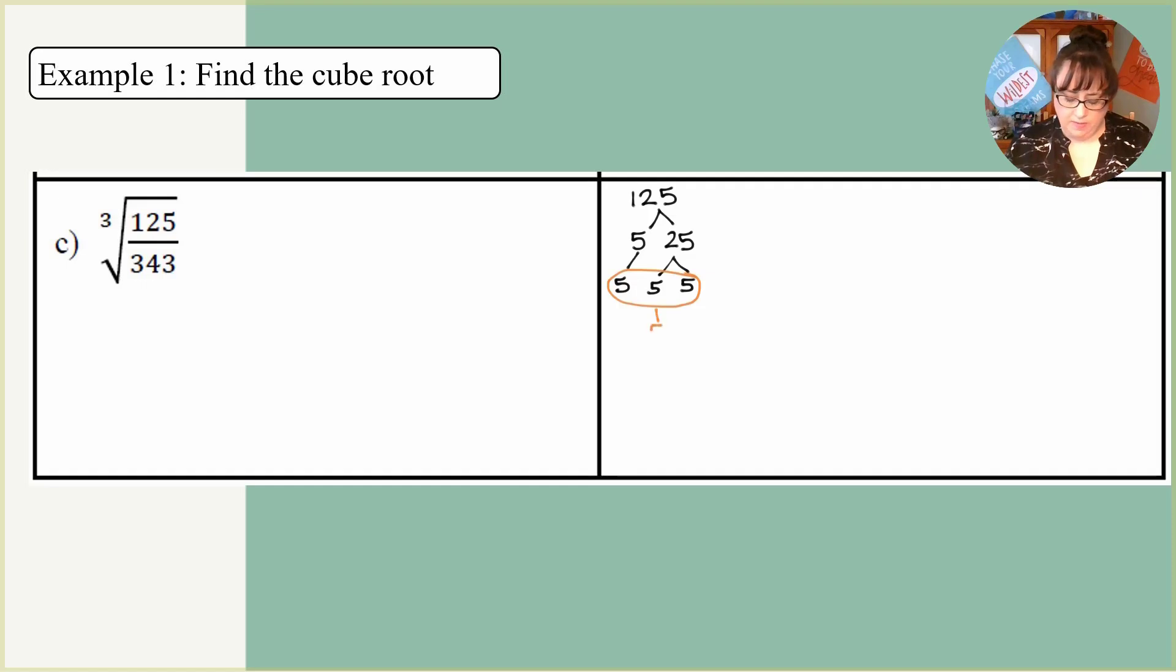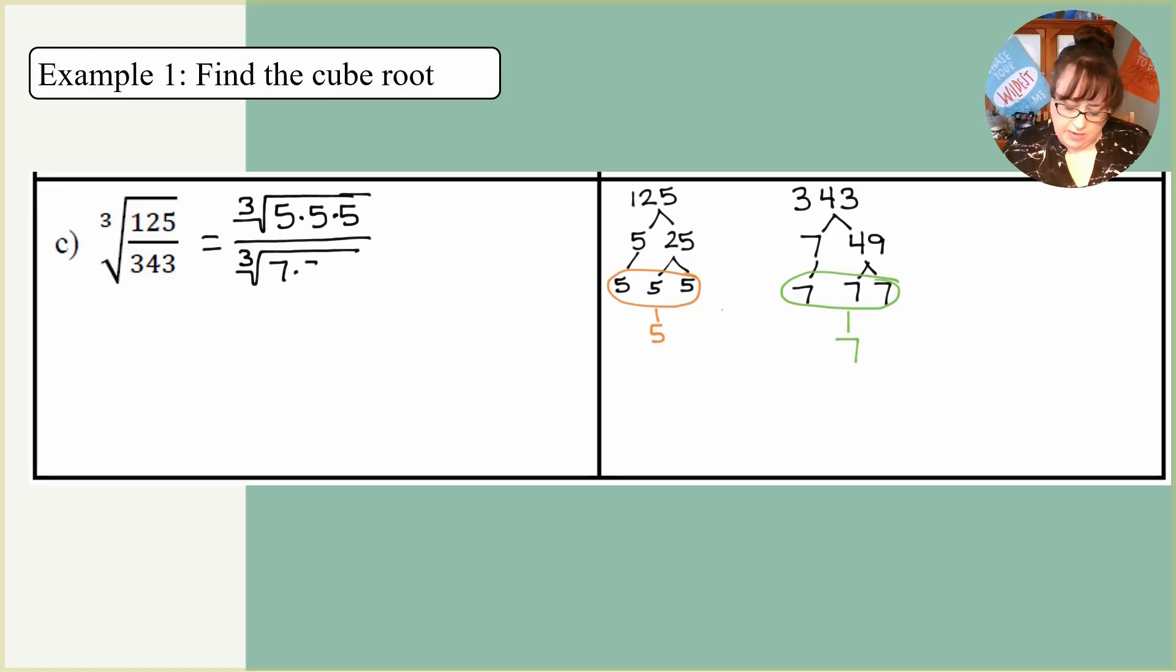125 I know is 5 times 25, which is 5 and then 5 times 5. I'm actually going to just do my triplets right here because I can see it so easily. I see that there's a set of triplets. So my answer is going to be 5. The other one was 343. I know based on work we did before that this was 7 times 49. So 7 and then 7 times 7. There's my triplets. So this is going to be 7. So sometimes you can even do finding your triplets on the bottom of your factor tree. So this is going to equal, oh let's go ahead and show it the work, the cube root of 5 times 5 times 5 over the cube root of 7 times 7 times 7. So then it ends up being 5 sevenths.